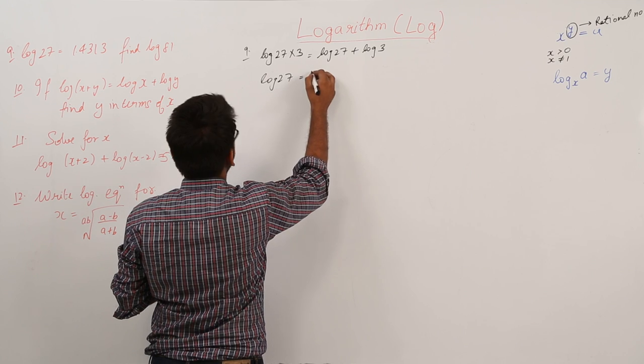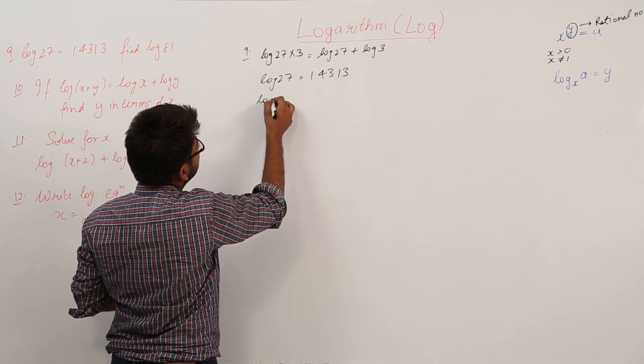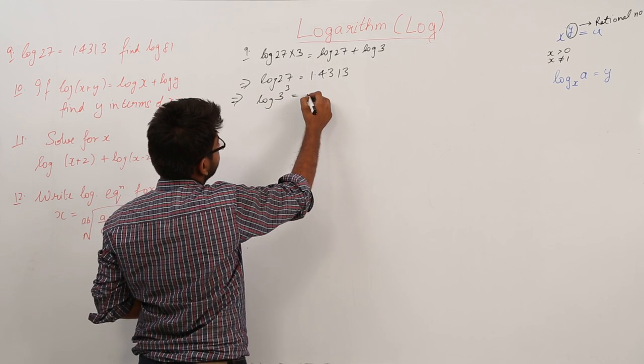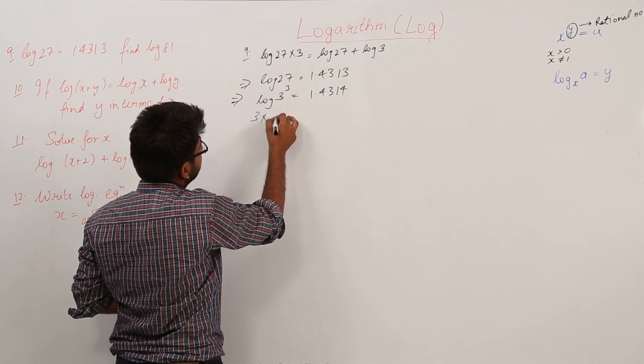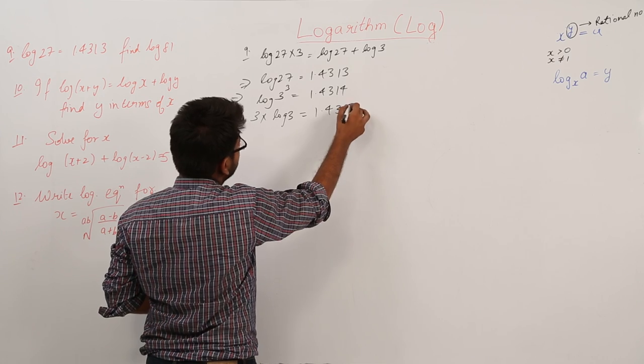Log 27 is equal to 1.4313. Now, this can be written as log of 3 raised to power 3 equals 1.4313. That means 3 times log 3 is equal to 1.4313.